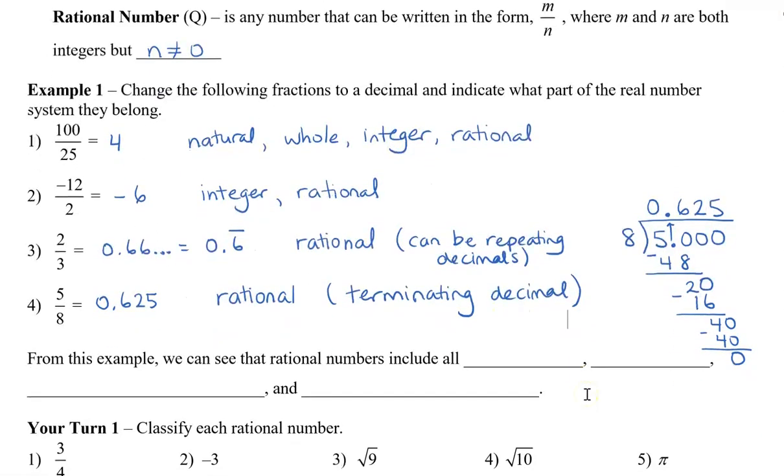All right. So from this example, we can see that rational numbers include all the integers and fractions and terminating decimals, or terminating decimal numbers, and also repeating decimal numbers. And that is the rational number system.